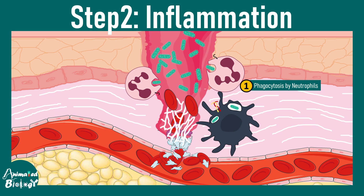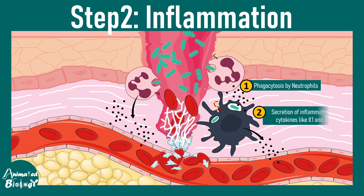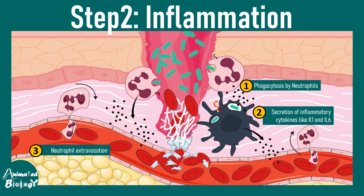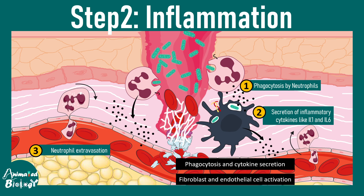Phagocytosis by neutrophils is the first event. Eventually these neutrophils and macrophages, which reach the tissue injury site, secrete chemokines and cytokines which further attract other neutrophils to the nearby area. Overall, inflammatory mediators like IL-1 and IL-6 help in this process. So phagocytosis and cytokine secretion are the key events in the inflammatory phase, and fibroblasts and endothelial cells get activated and begin secreting factors important for wound healing.